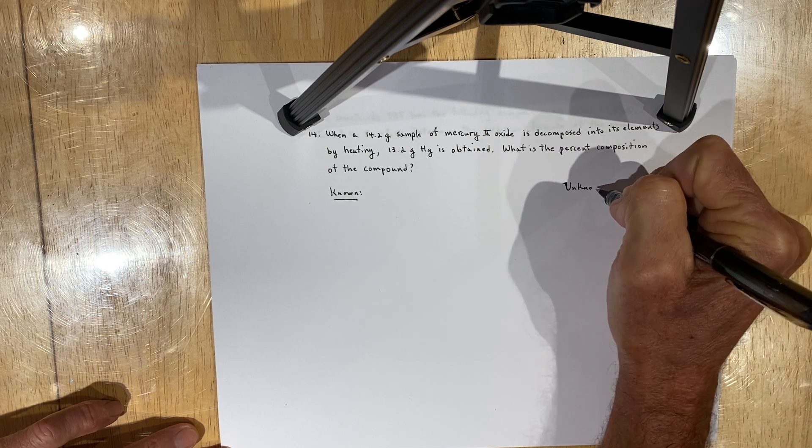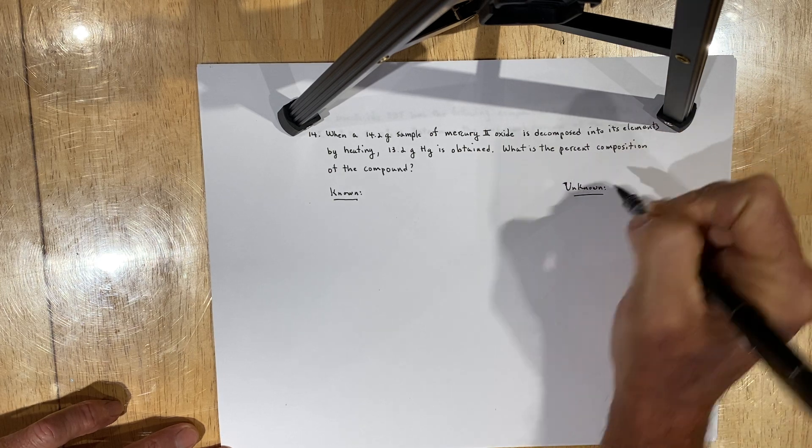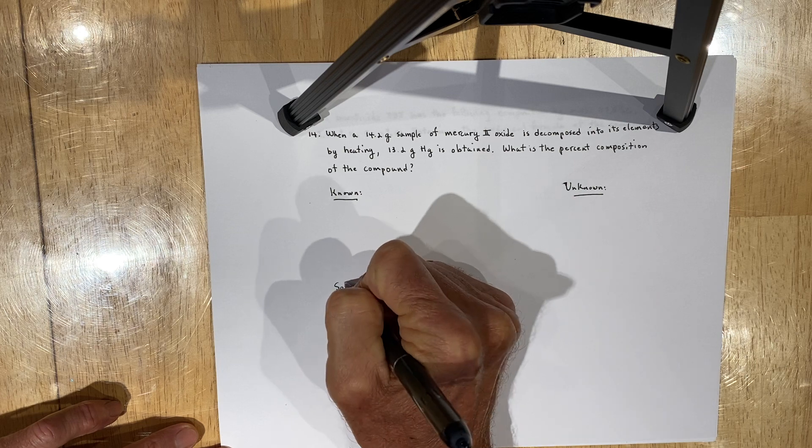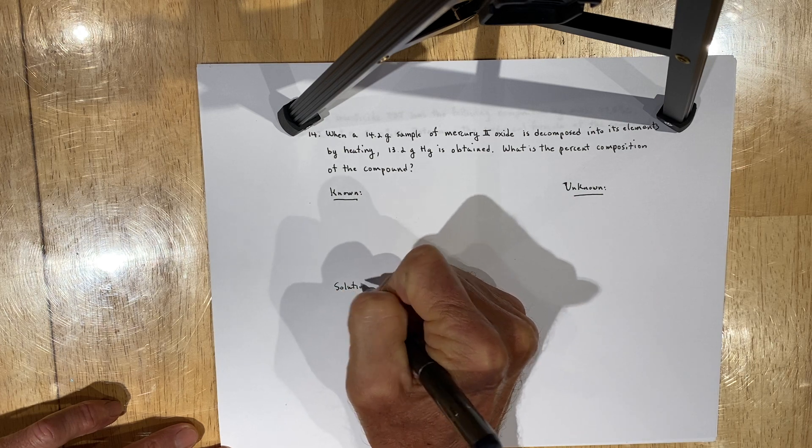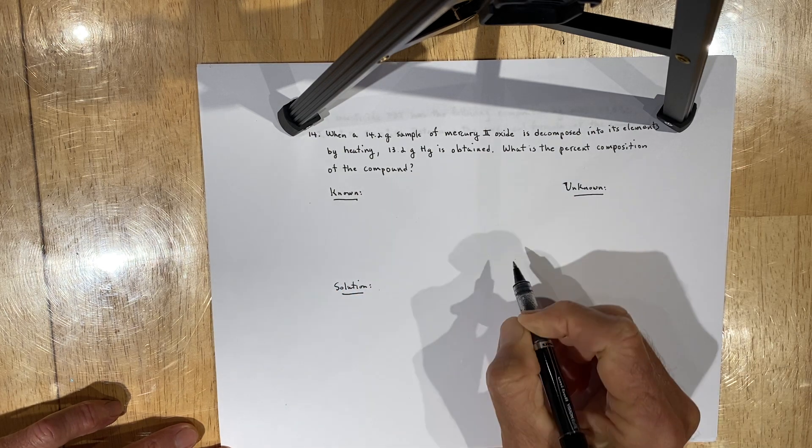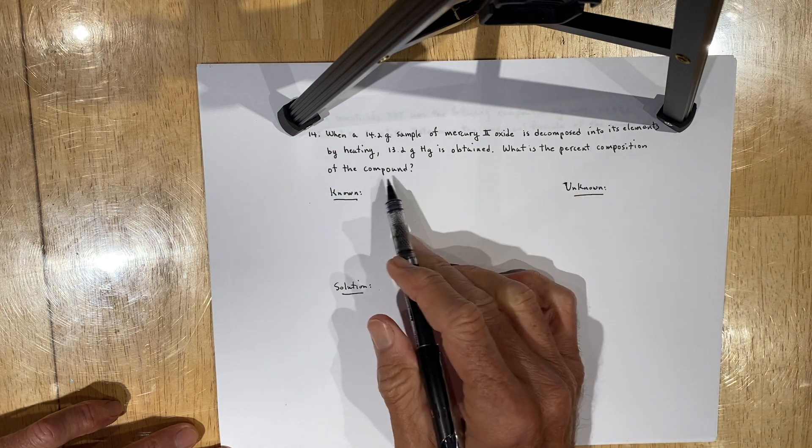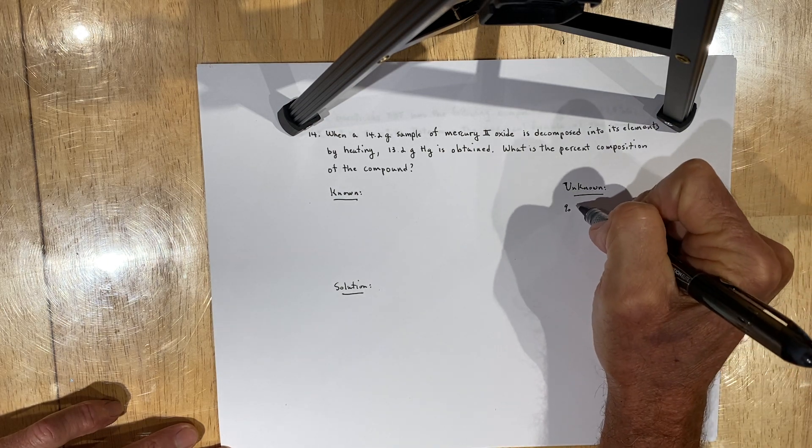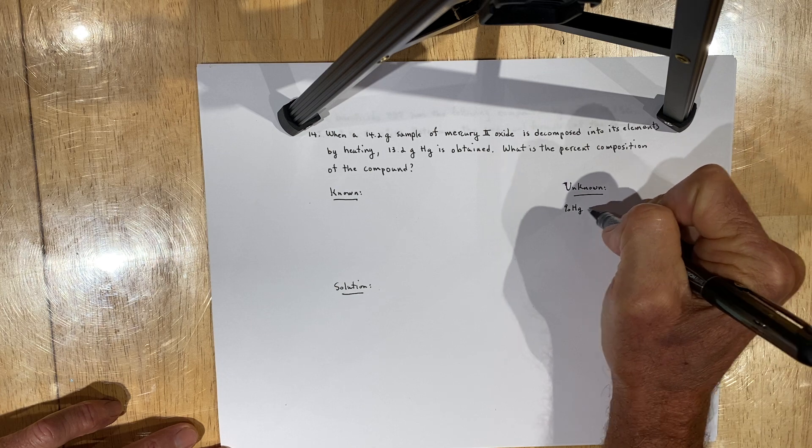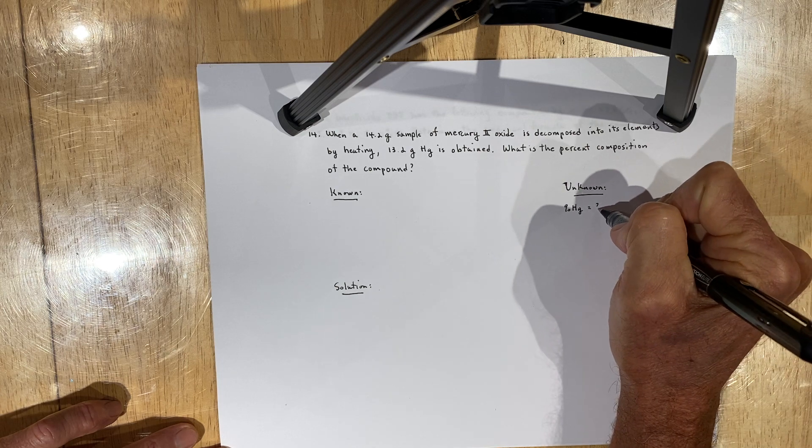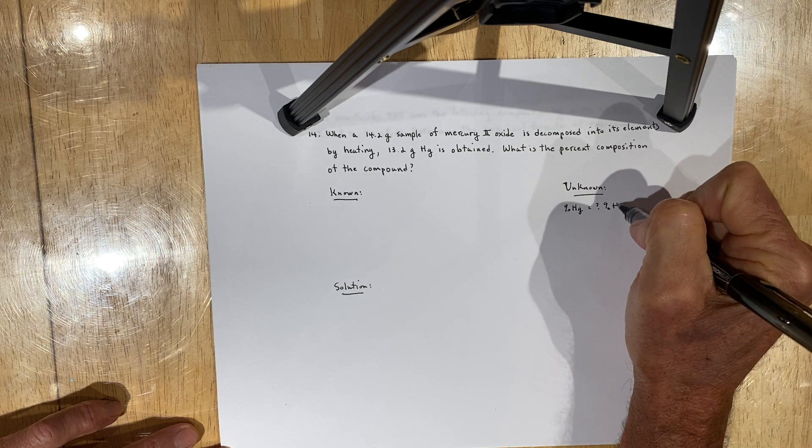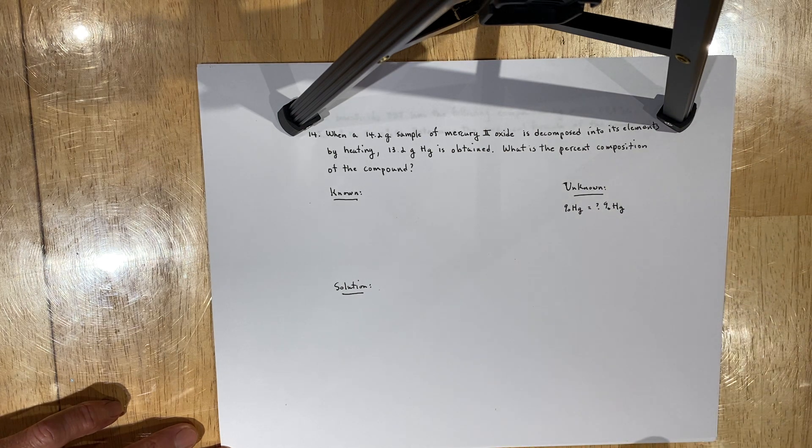So first of all, you're asked to calculate percent composition of the compound. You're being asked to determine what's the percent of mercury in the compound and some units of percent, and that would be percent by mass.